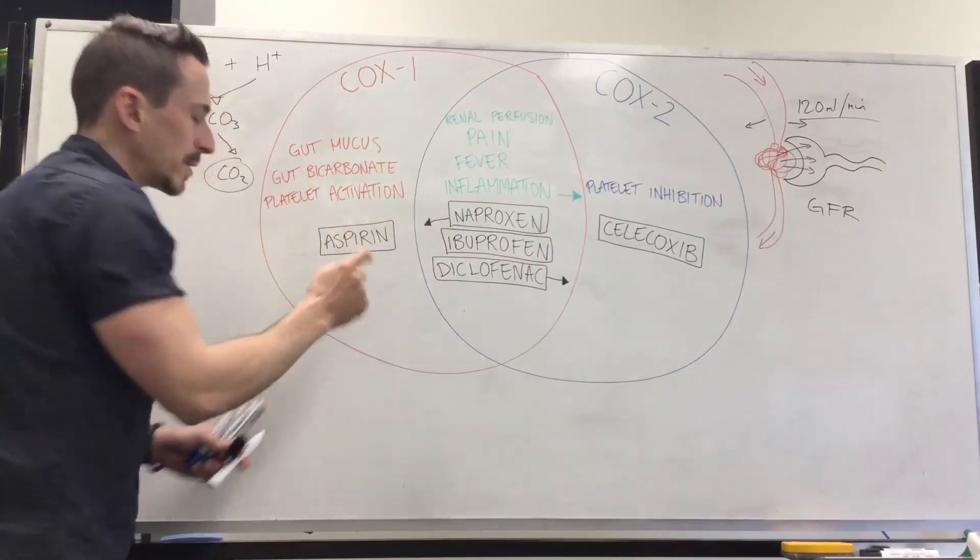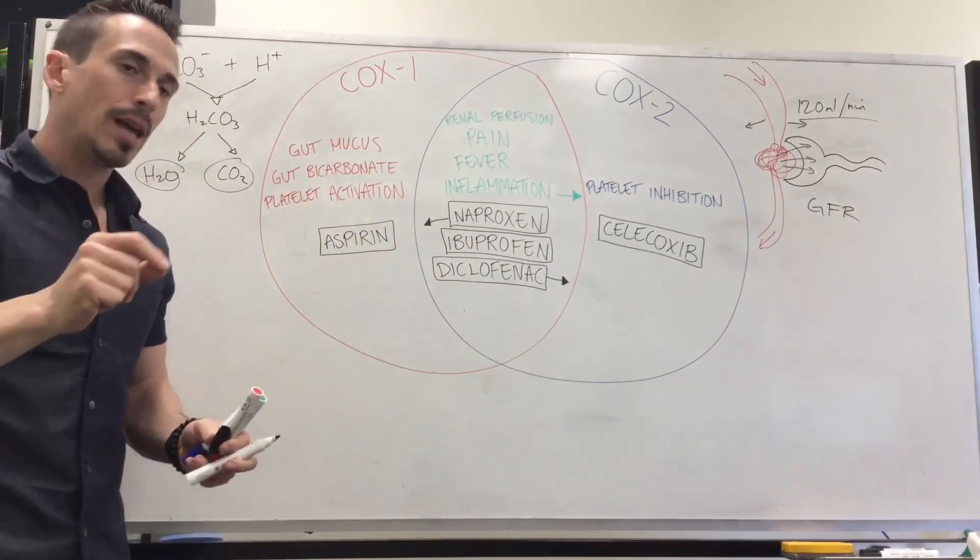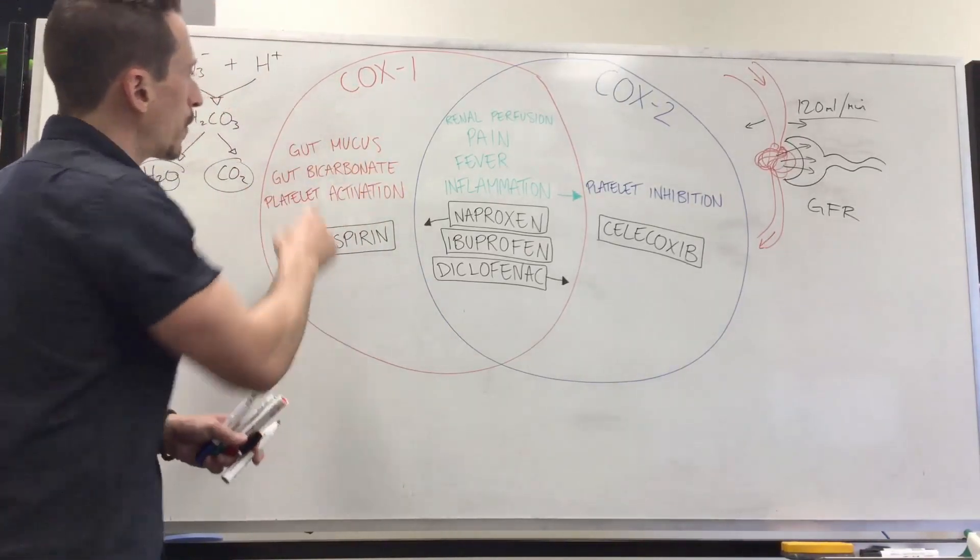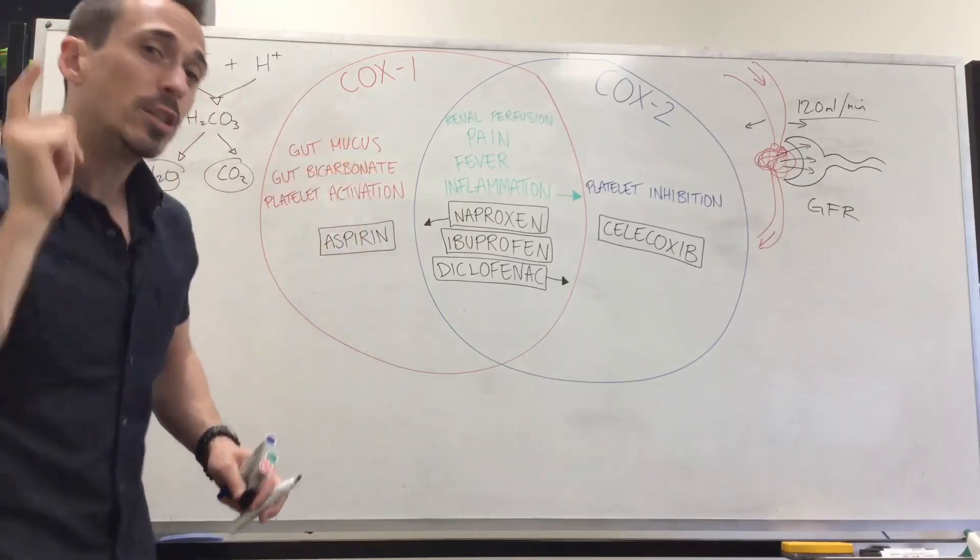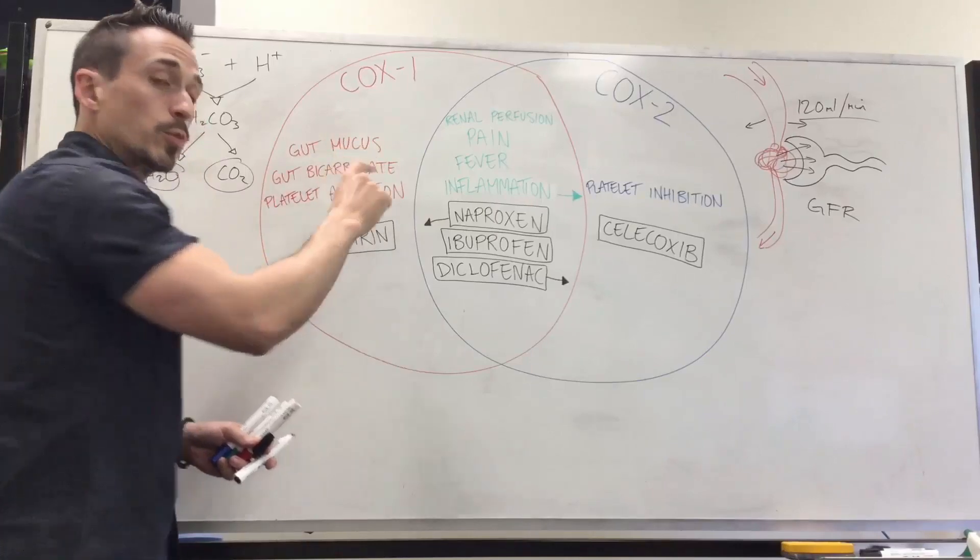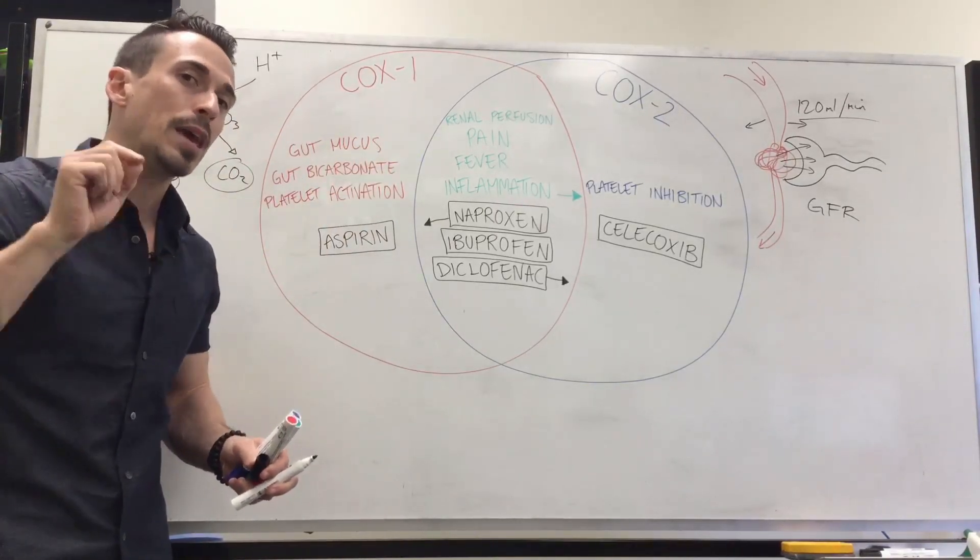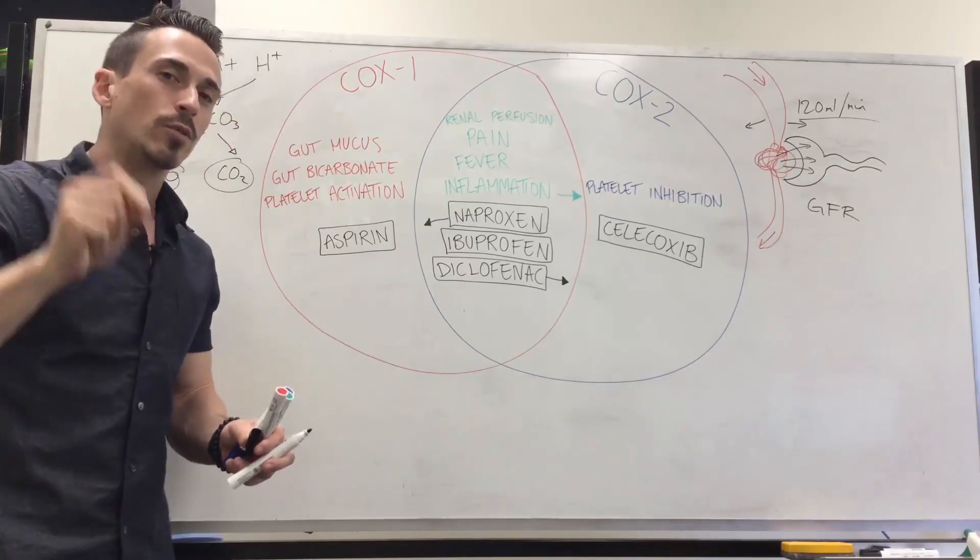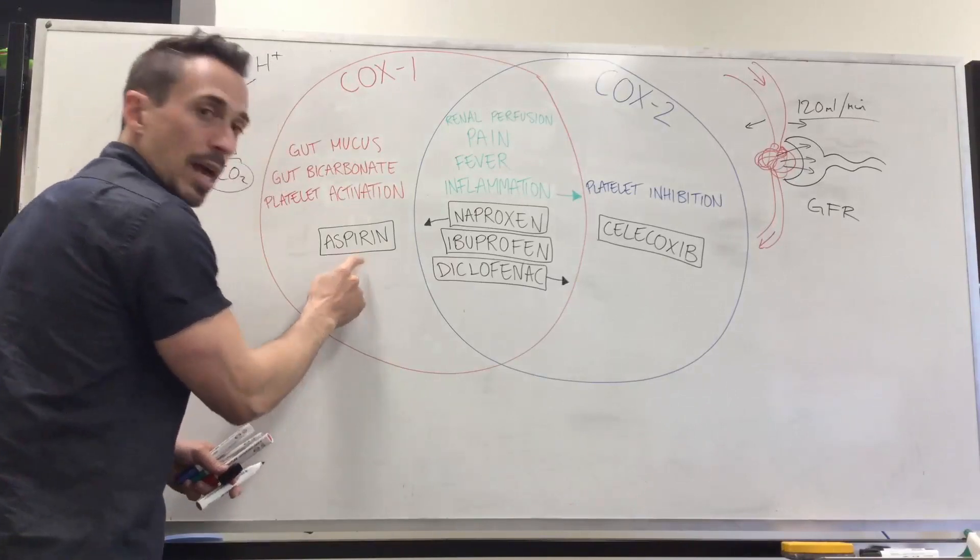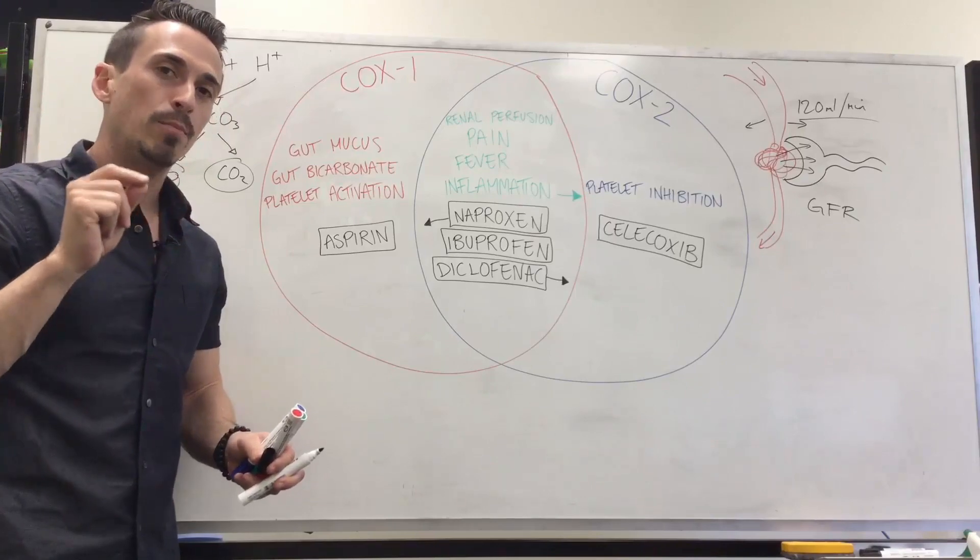Let's first start with COX-1. Aspirin is a COX-1 specific drug, and what it does is it stops COX-1. So if you take aspirin, it's stopping gut mucus production, it's stopping gut bicarbonate production. These two things, which protect the stomach, are no longer there, which means the acid that's being produced can now irritate the stomach and result in gastrointestinal upset. This is the major adverse effect of taking aspirin, is GI upset and GI bleeding.